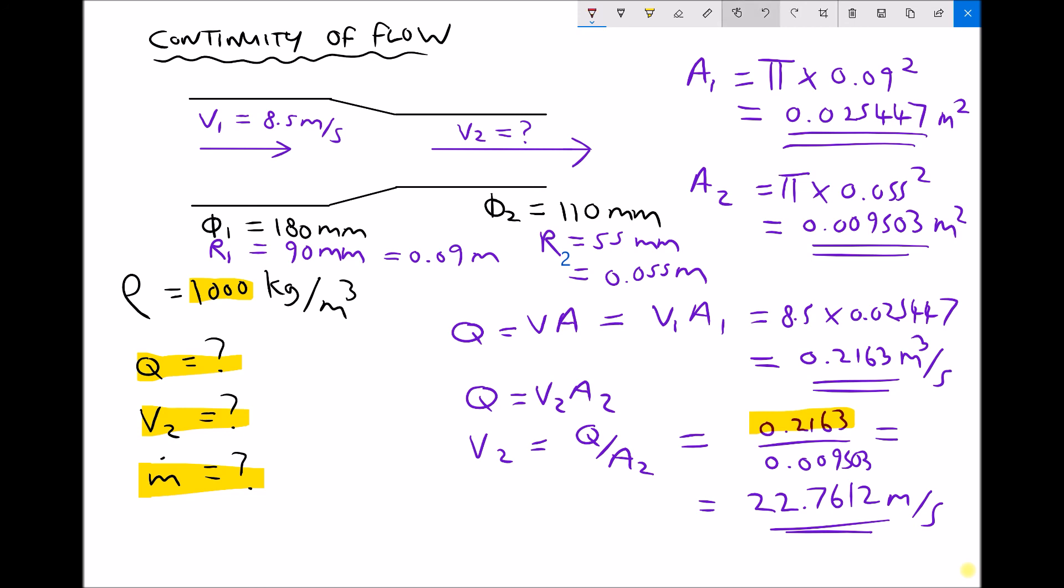Now just to finish off, I'm going to calculate our mass flow rate. And this is very straightforward because mass flow rate is just density times volume flow rate. In this case, 1000 times 0.2163, which gives me an answer of 216.3 kilograms per second. So the only formulas we need to remember here is Q equals VA and m dot equals ρQ. And they're both included on the equations and information sheet for this topic.